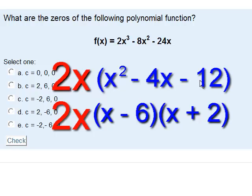So, the whole chimichanga factors down into 2x times parentheses x minus 6 times parentheses x plus 2.